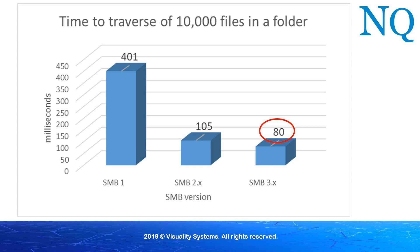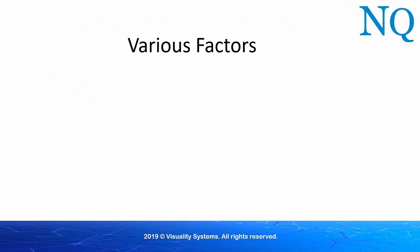So now let's summarize the various factors related to SMB performance. If there is an extensive amount of SMB traffic, more CPU power will be required on both the client and the server side, as well as additional memory for the SMB buffers.